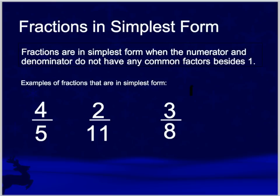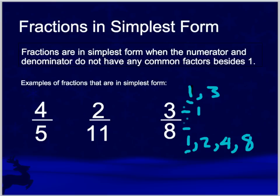The only factors of three are one and three. The factors of eight are one, two, four, and eight. There is no common factor besides one. Even if we divide by one on both, three divided by one is three and eight divided by one is eight — we still have three-eighths. That's why that fraction is in simplest form.